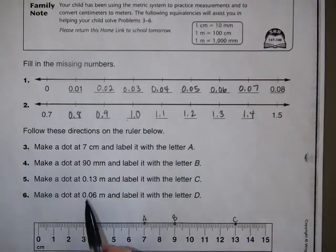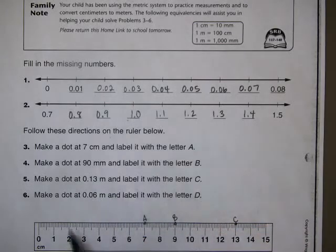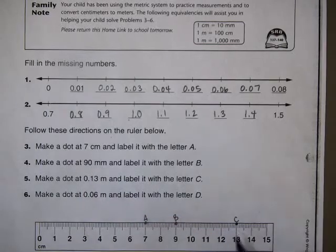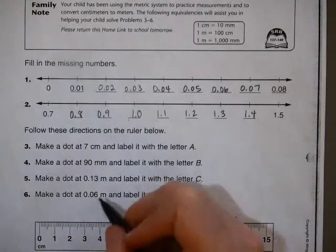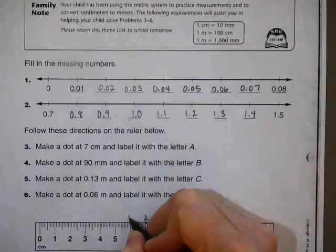And then, make a dot at 0.06, or 6 hundredths of a meter, and label it with the letter D. Well, if 13 hundredths of a meter is 13 centimeters, then 6 hundredths of a meter is going to be 6 centimeters. And I'm going to label it with the letter D.